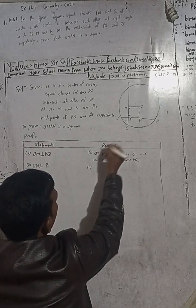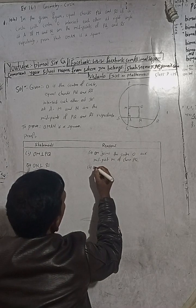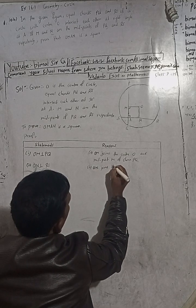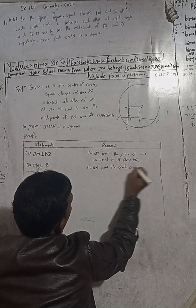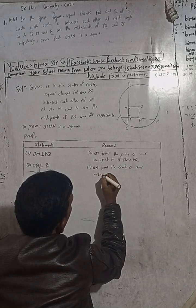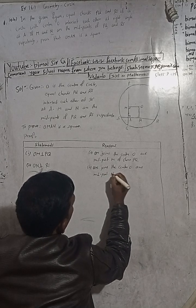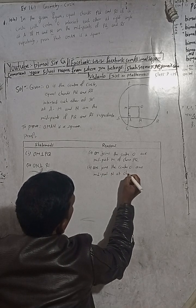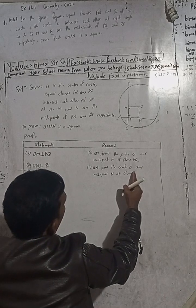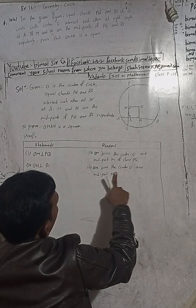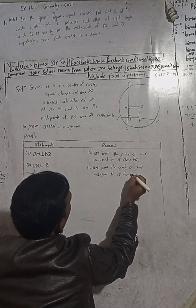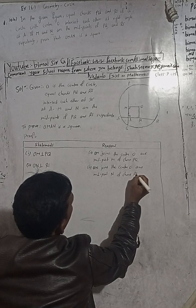Similarly, the line joining center O and midpoint N of chord RS is perpendicular to chord RS.